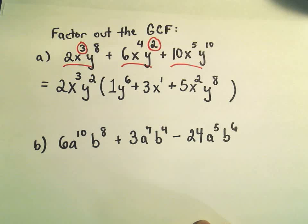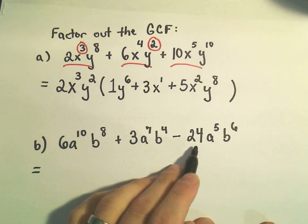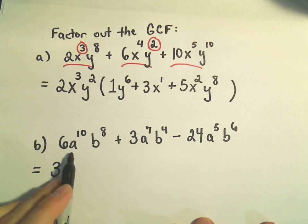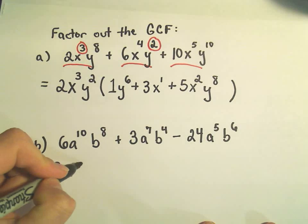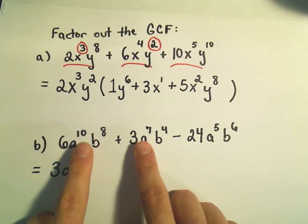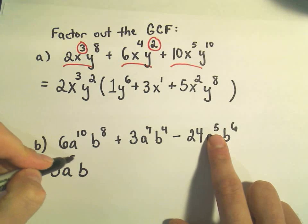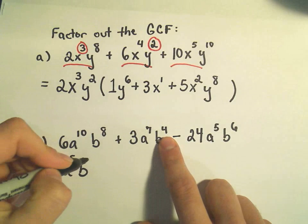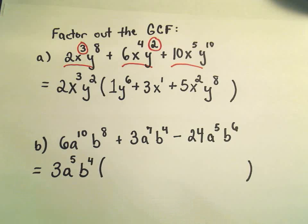And now we've factored out the greatest common factor. Let's do the same thing in Part B, a little bit faster. I see a 6, a 3, and a negative 24 — the greatest common factor of those three numbers is 3. I notice there's an a and a b in all of the terms, so I can factor out a to some power and b to some power. The exponents on the a's are 10, 7, and 5 — I pull out the smallest exponent, which is 5. The b exponents are 8, 4, and 6 — I pull out the smallest, which is b to the fourth.